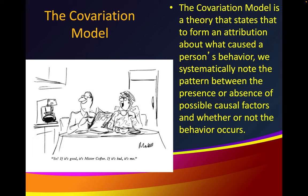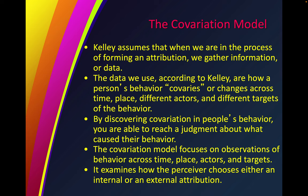The covariation model is a theory that states that to form an attribution about what caused a person's behavior, we systematically note the pattern between the presence or absence of possible causal factors and whether or not the behavior occurs. Kelly assumes that when forming an attribution, we gather information about how a person's behavior co-varies or changes across time, place, different actors, and different targets of the behavior. The covariation model focuses on observations of behavior across time, place, actors, and targets, and examines how the perceiver chooses either an internal or external attribution.